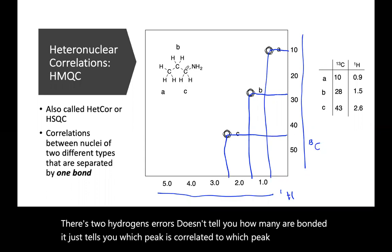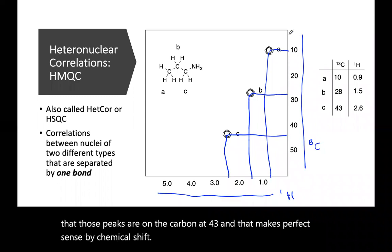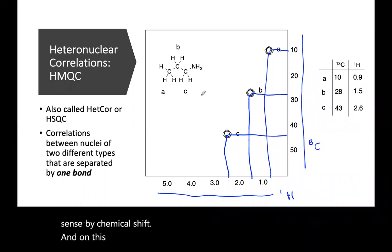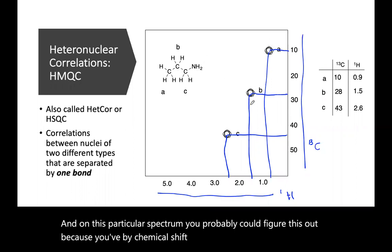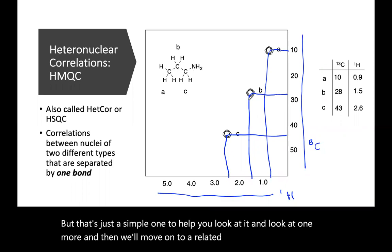So those peaks are on the carbon at 43, and that makes perfect sense by chemical shift. On this particular spectrum, you probably could figure this out by chemical shift alone. But that's just a simple one to help you look at it. We'll look at one more, and then we'll move on to a related technique in the next video.